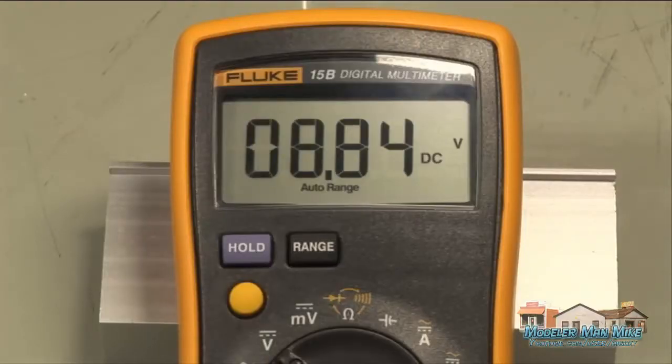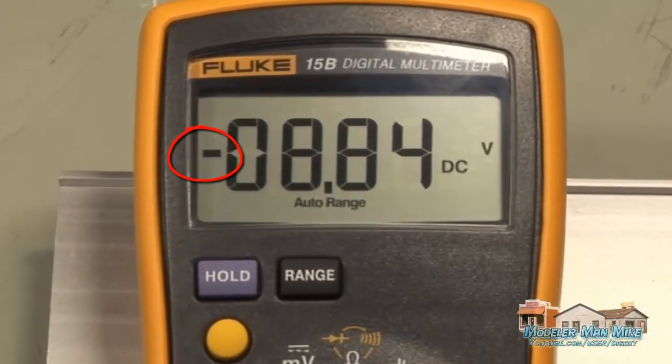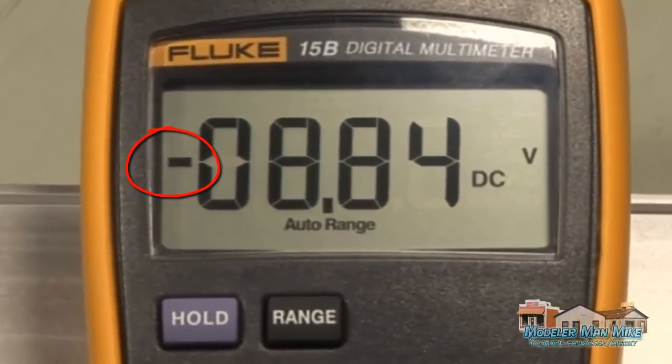If you plug your leads in backwards you'll just show an indication like this. A negative voltage. But that's okay. It just means we have the leads backwards.